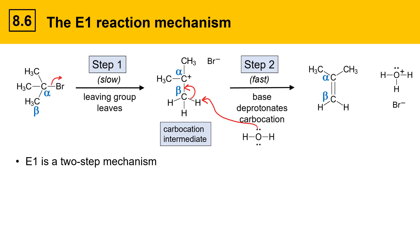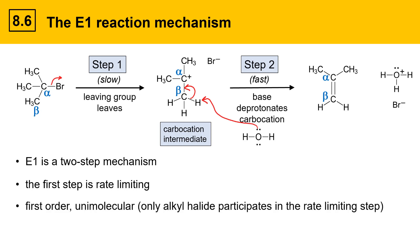The E1 mechanism is a two-step mechanism. The first step is the rate limiting step, the slow step, so the overall process depends only on the formation of the carbocation. Therefore the reaction is first order or unimolecular.